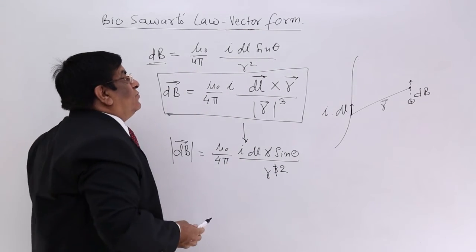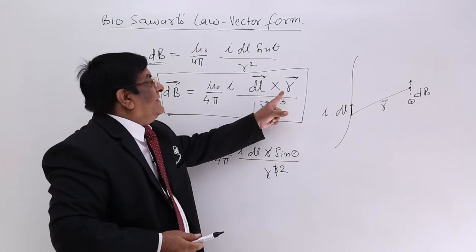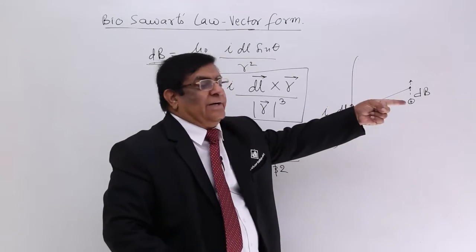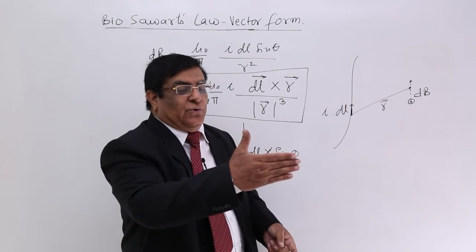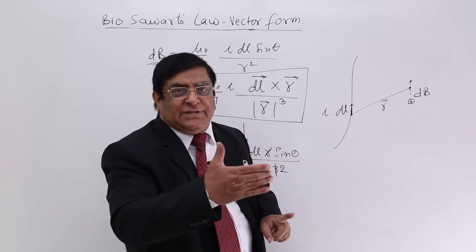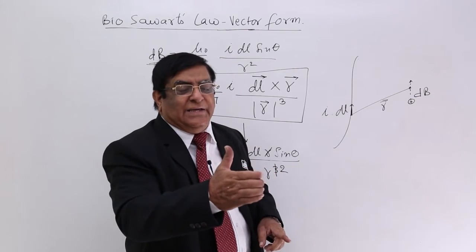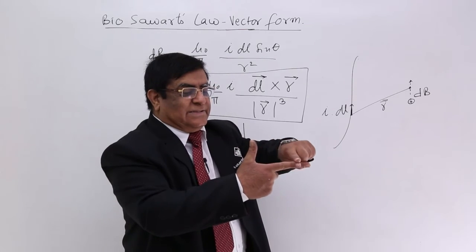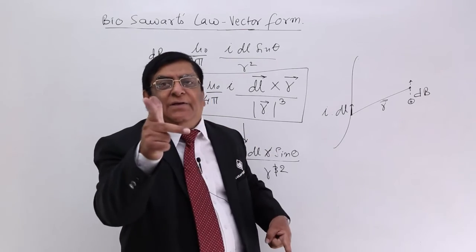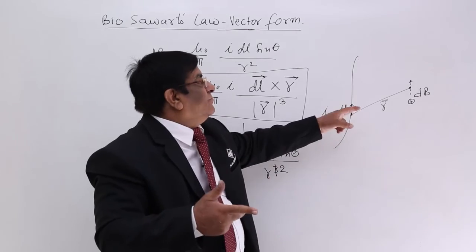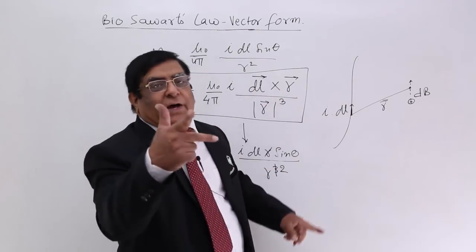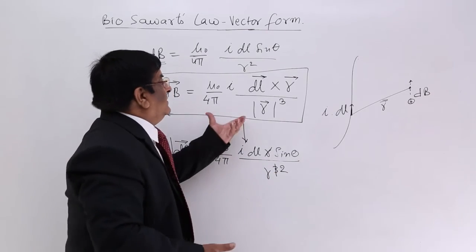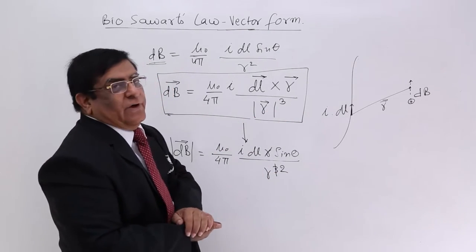Now in this vector form we have the cross product of dl and r. Here dl is in this direction, r is in this direction, so dB which is a third quantity, the vector product, will be in this direction. See here, if this is dl, this is r, then this will be the product of the two, that is dl cross r, and that is the direction of dB. So this gives the vector formula for Biot-Savart's law.